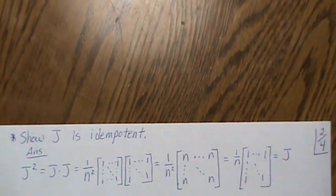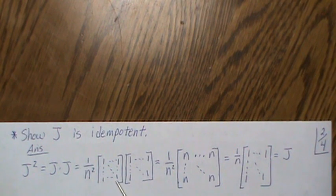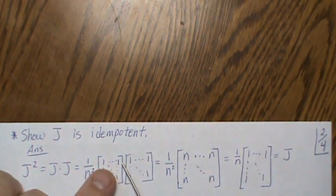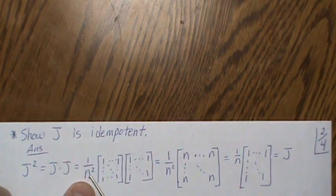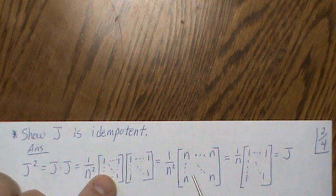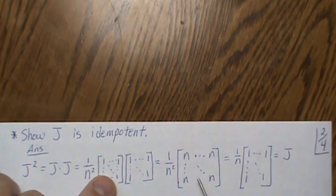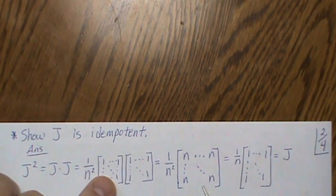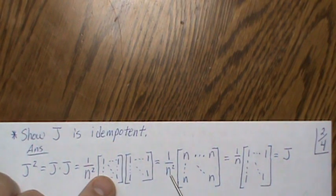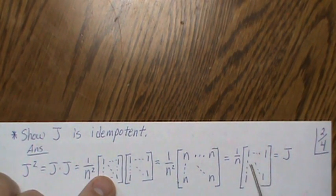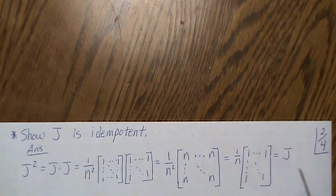We want to show that J is also idempotent. J² = J·J. We take the constants out front and multiply them together. When you do the matrix multiplication, you get an n×n matrix of n. Taking one factor of n out gives n divided by n = 1, and we get J back. So J is idempotent.